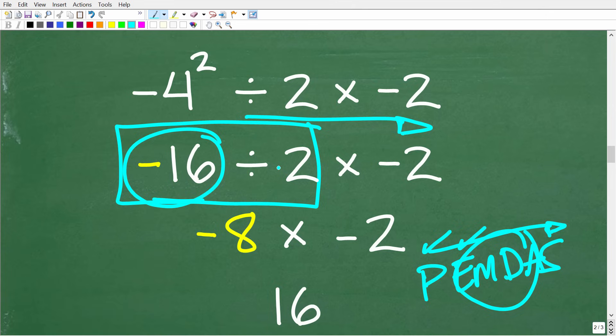So we have negative 16 divided by a positive 2. A negative divided by a positive is negative. So negative 16 divided by a positive 2 is negative 8. So finally, we're down to negative 8 times negative 2. A negative times a negative is positive. So our final correct answer is a positive 16.